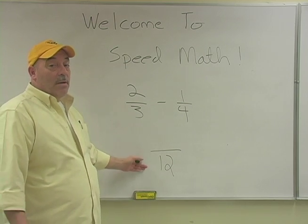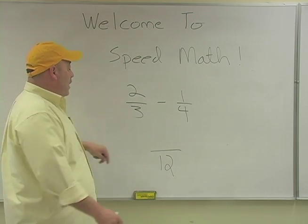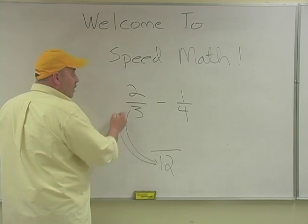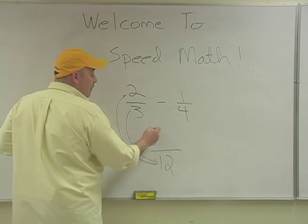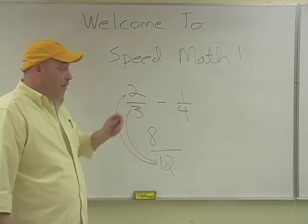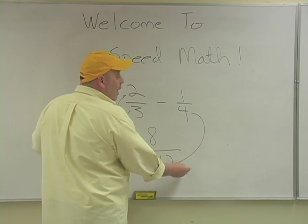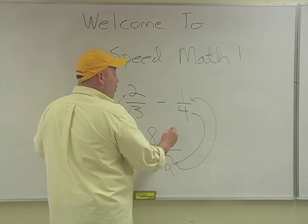So what I ask you to do, I'll take this, three into twelve is four, and four times two is eight. Moving on to the second fraction. Four goes into twelve three times, and three times one is three.